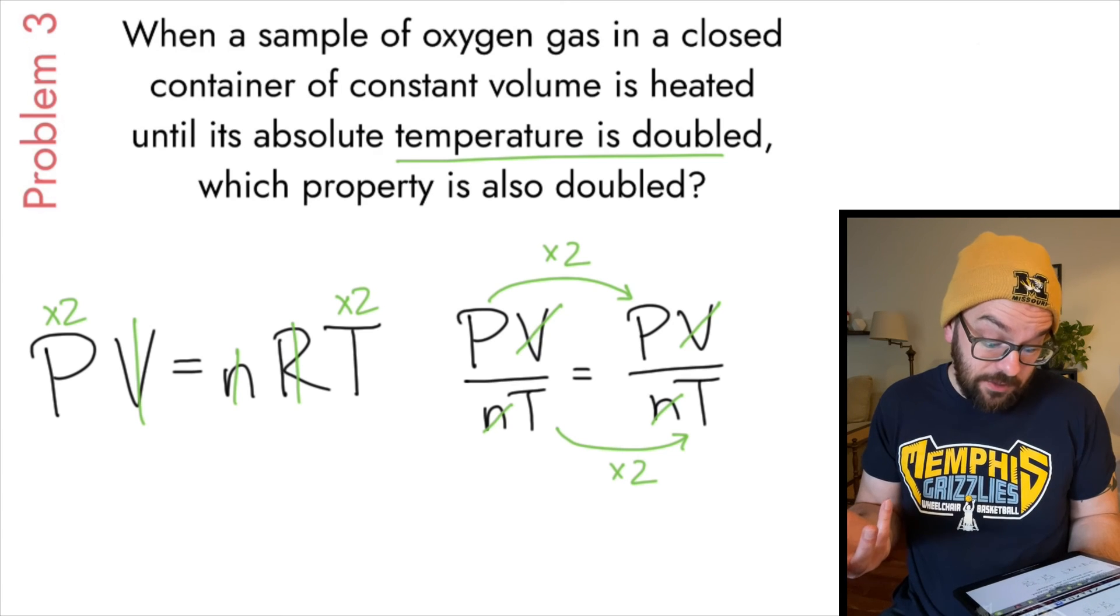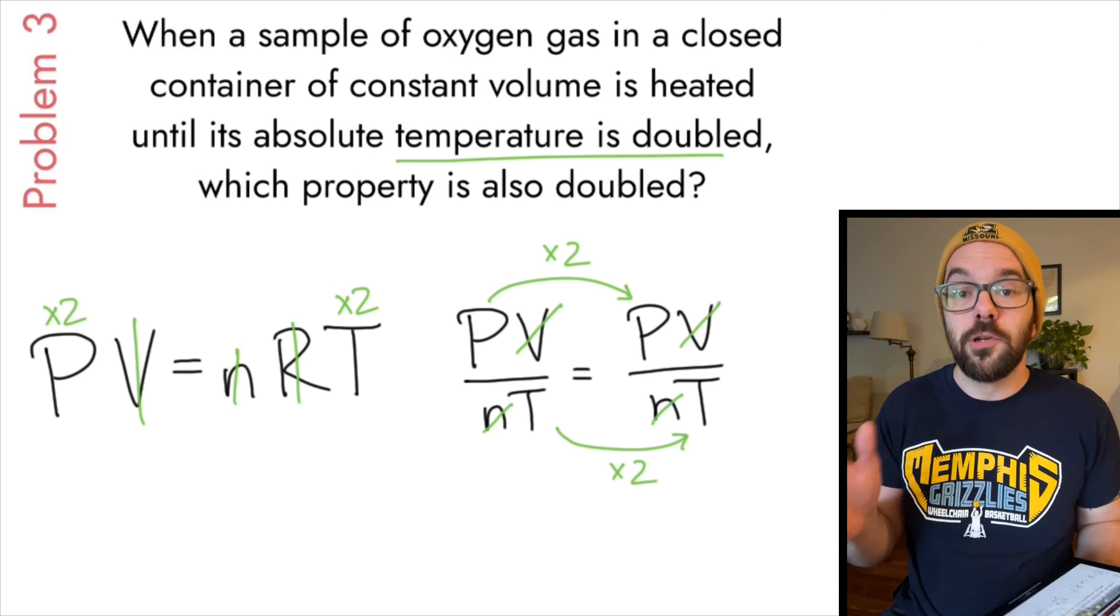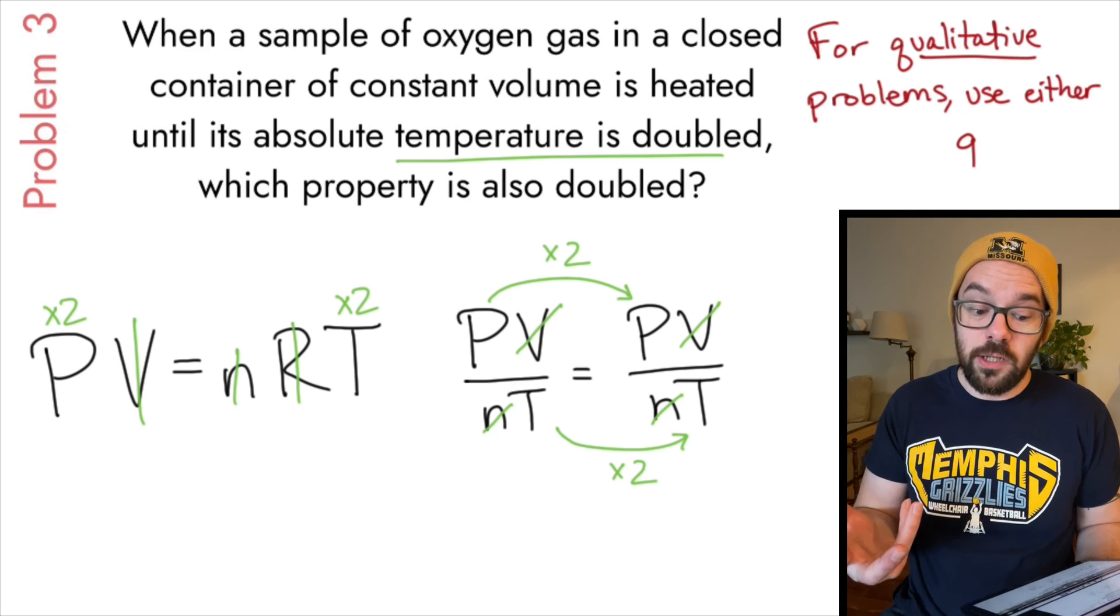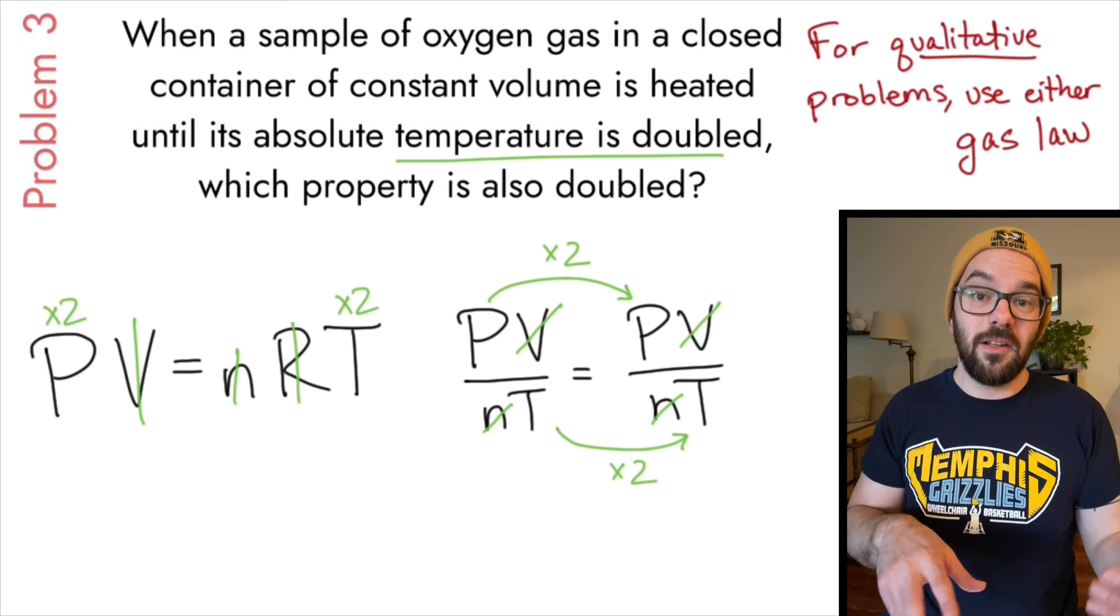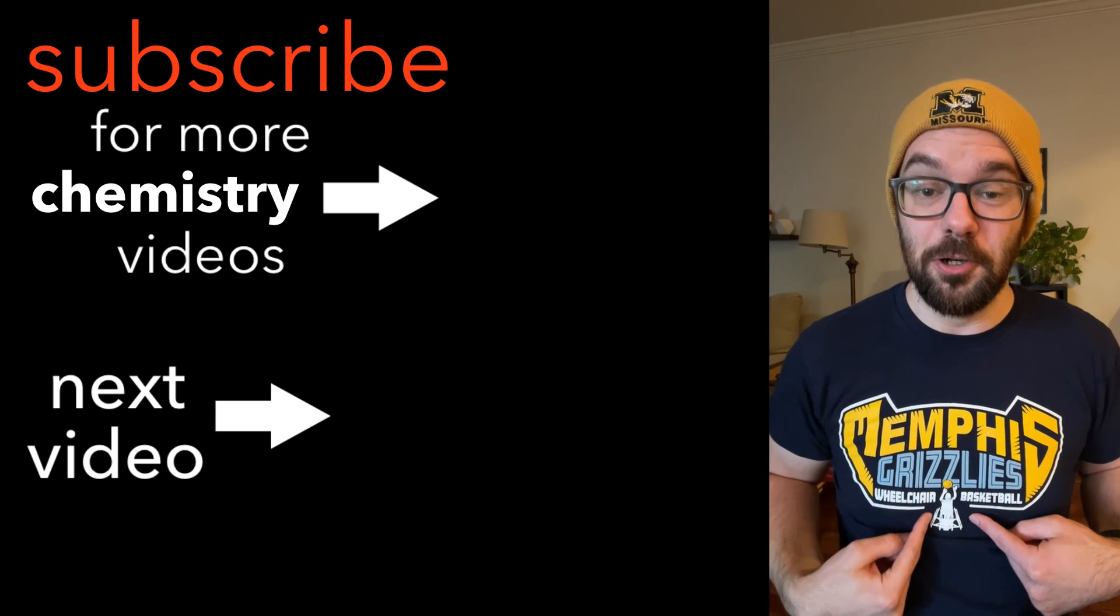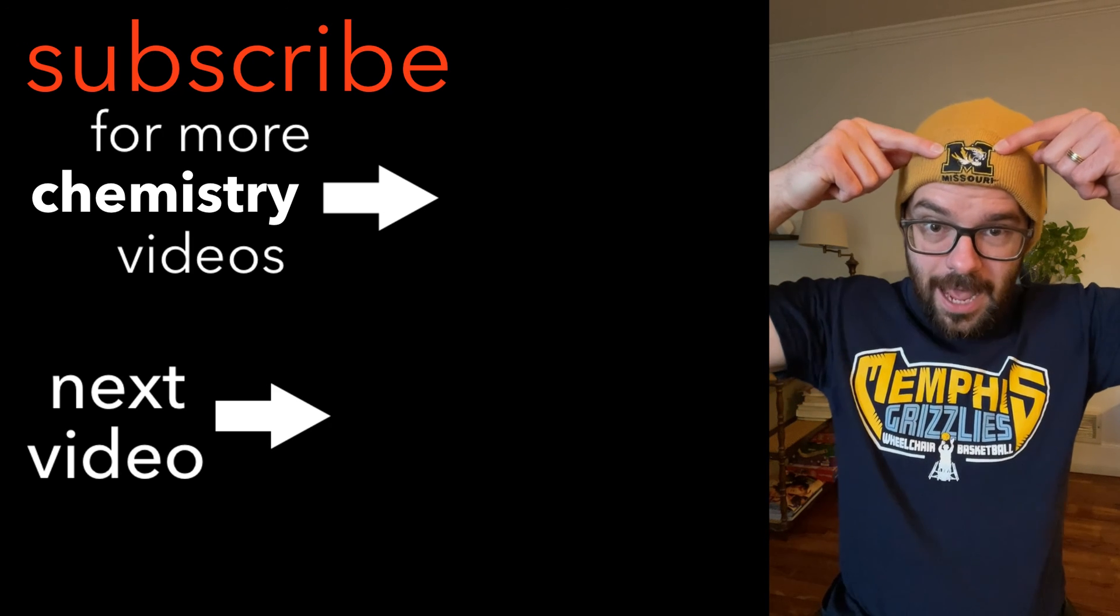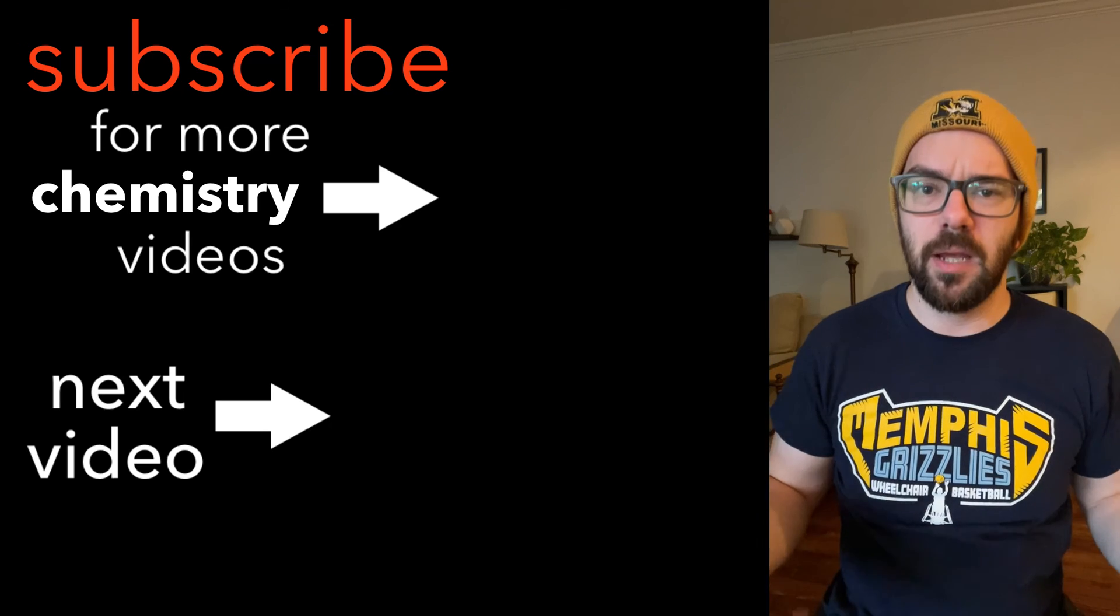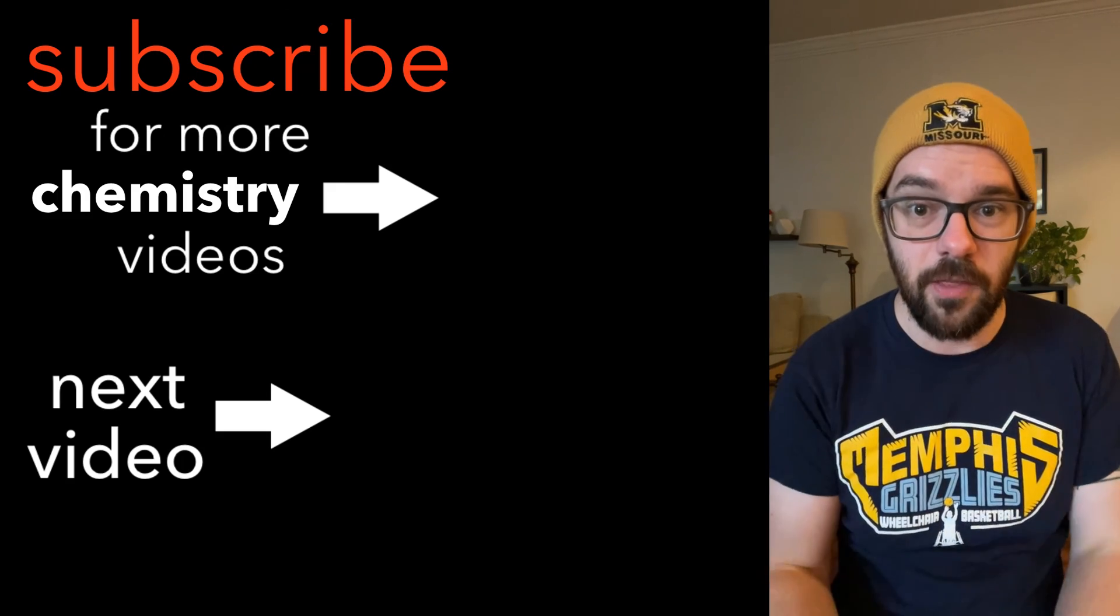Now, the question might not be asking specifically about temperature and pressure. It could be asking about volume, amount of gas, or some other combination of these, but you can still use the same framework to figure it out. But a takeaway here is whenever you have a qualitative problem, you can really use either gas law for your reasoning. All right. So that was an intro into the ideal gas law and the combined gas law. I hope that was helpful. Also, if you notice, I'm repping some cool stuff that I like. This is the new logo for the wheelchair basketball team that I play on, the Memphis Grizzlies wheelchair basketball team. I've got a Mizzou hat on. That's where I went to college. And then I've got a tattoo of the Memphis skyline because Memphis is a cool place to live. And if you found this helpful, do the subscribe. I hate asking for that, but...